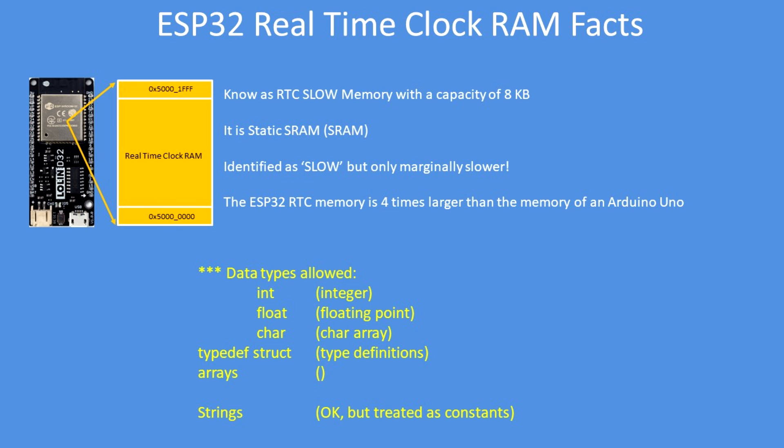The real-time clock memory — the 8 kilobytes of spare memory — is also known as RTC slow. It is marginally slower with a different clock source to the main RAM, but to all intents and purposes it's running at full speed. It's worth noting that the ESP32's spare RAM has more memory than the Arduino Uno altogether.